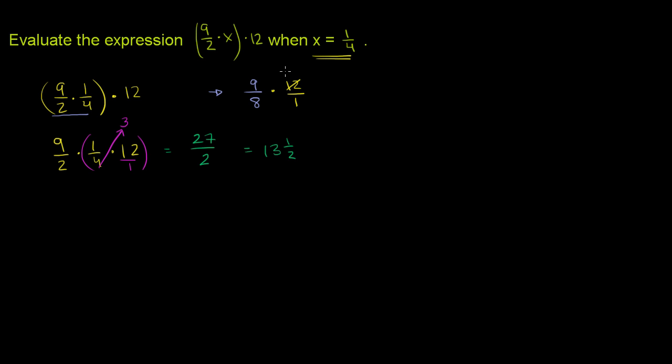So the eventual numerator, let's divide that by 4. We'd get a 3 over here. Let's divide the eventual denominator by 4. You have to divide by the same thing as you divide the numerator by, so we get a 2. So this is going to be 9 times 3 is 27 over 2 times 1, which is 2, which is the exact same answer.